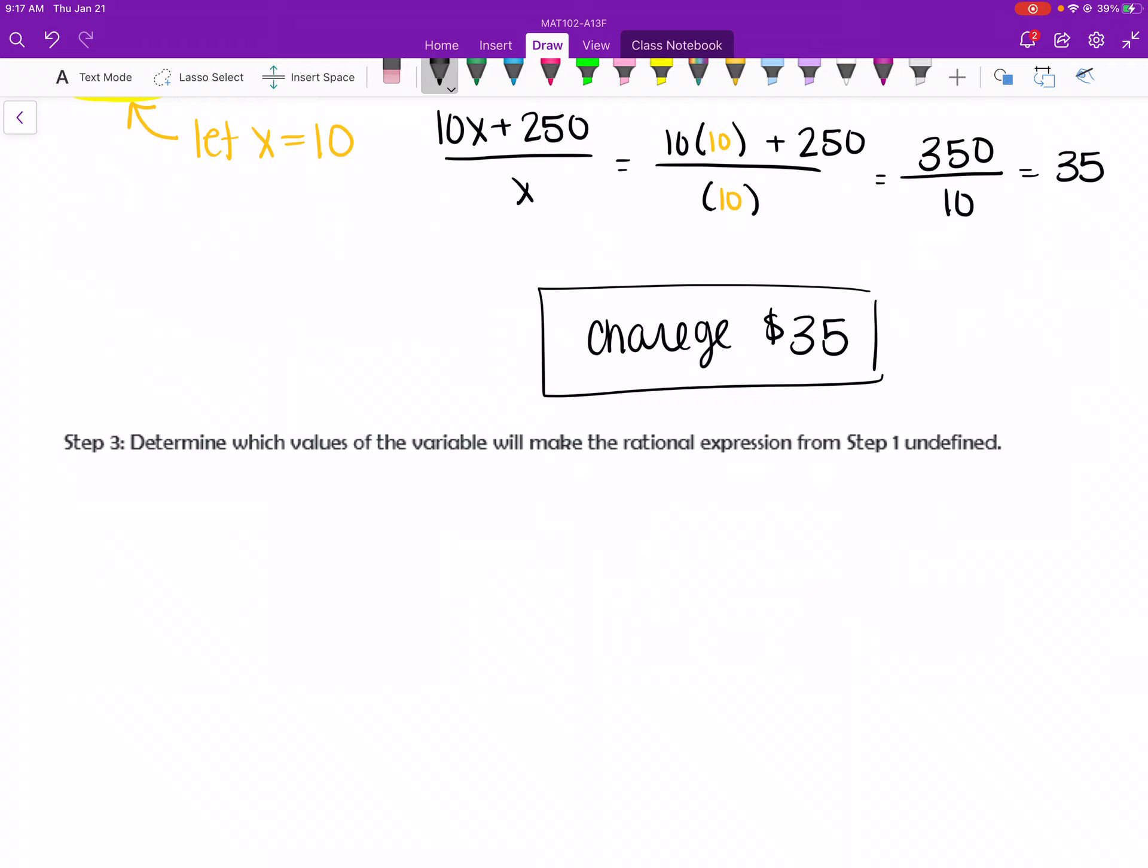Step 3 says determine which values of the variable will make the rational expression undefined. Whenever we see stuff about undefined, we are going to take the denominator and set it equal to 0. Because if the denominator equals 0, that is a problem. And so my original expression, 10x plus 250 divided by x, I'm going to take the denominator, set it equal to 0. Well, it's already solved.